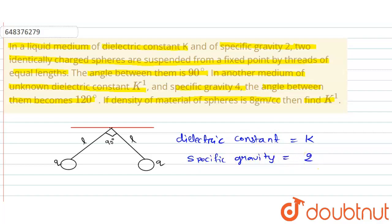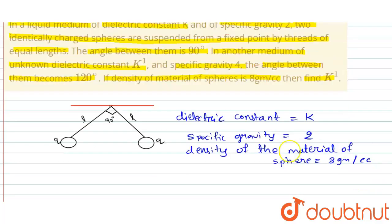Density of the material is equal to 2...density of the material of sphere is 8 gram per cc. So we can write tan 45° = (1/4πε₀K)(q²/2L²) divided by (8-2)Vg.